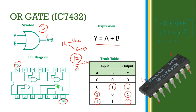There are four OR gates in this IC. The first OR gate has inputs at pins 1 and 2, with output at pin 3. The second OR gate has inputs at pins 4 and 5, with output at pin 6. The third OR gate has inputs at pins 9 and 10, with output at pin 8. The fourth OR gate has inputs at pins 12 and 13, with output at pin 11.